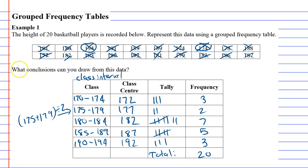Now they do have a question which says what conclusions can you draw from this data. I would just say we notice that most of the basketball players were between 180 to 184. That's something we can say. Most of the basketball players are from 180 to 184 centimeters.